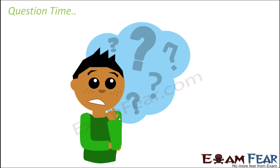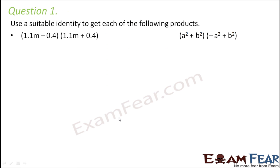Use a suitable identity to get each of the following products: (1.1m - 0.4)(1.1m + 0.4). When you look at this closely, if this is a and this is b, then this is of the form (a - b)(a + b).